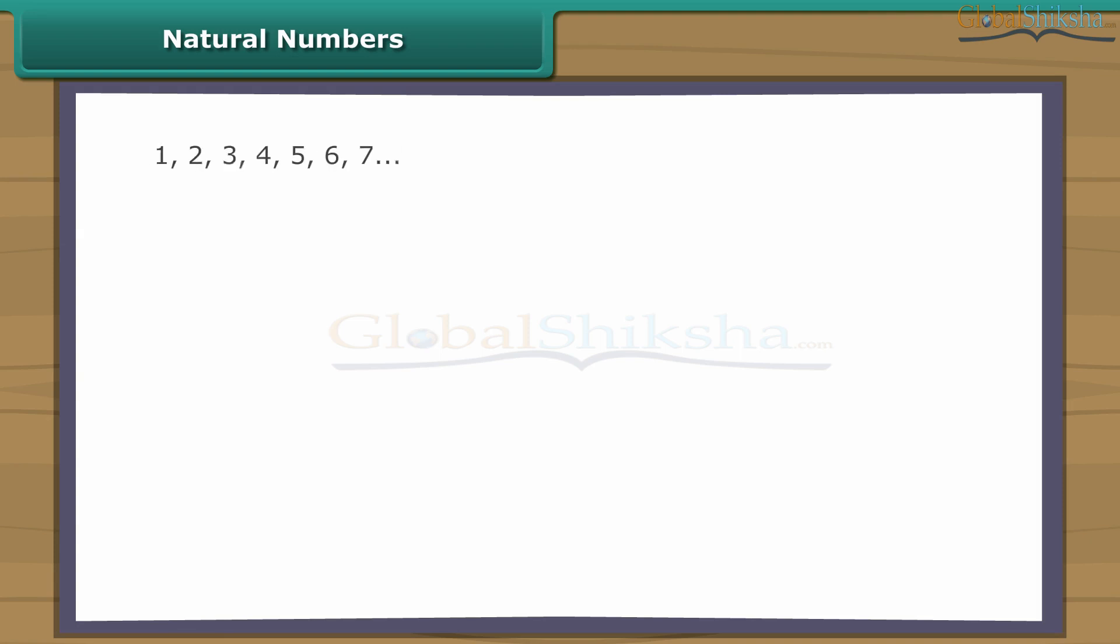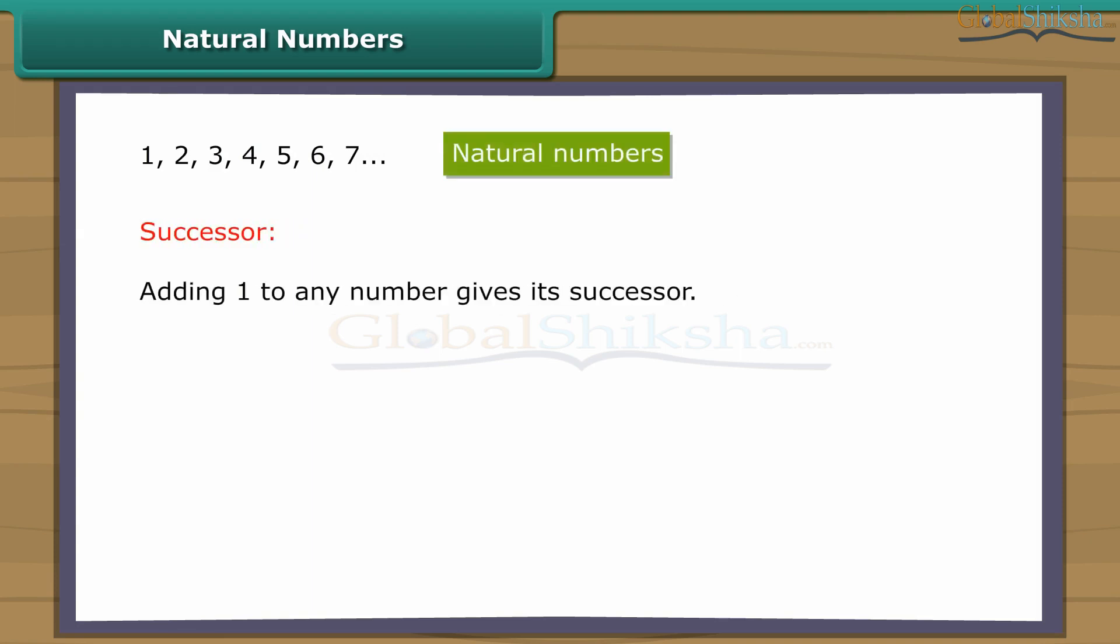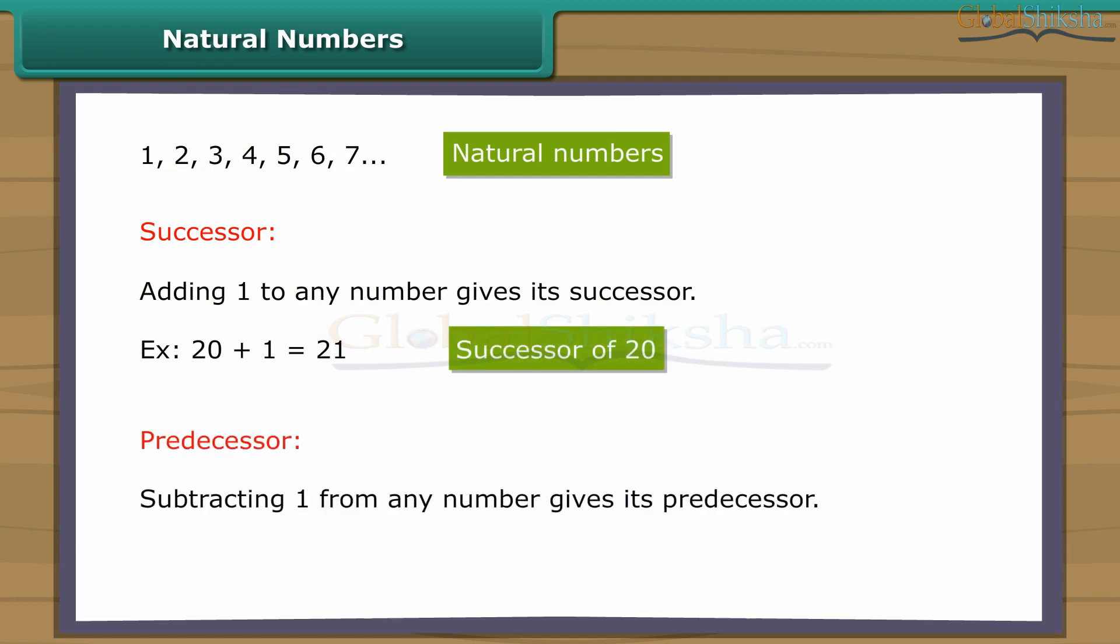Natural numbers. We use 1, 2, 3, 4 to count the objects. Counting numbers are also known as natural numbers. Adding one to any number gives its successor. Example, one added to twenty gives twenty-one, which is successor of twenty. Subtracting one from any number gives its predecessor. Example, subtracting one from twenty gives nineteen, which is the predecessor of twenty. Interesting question: What is the largest natural number?